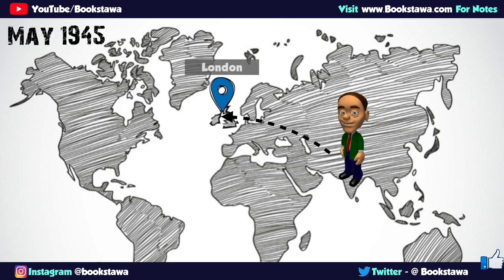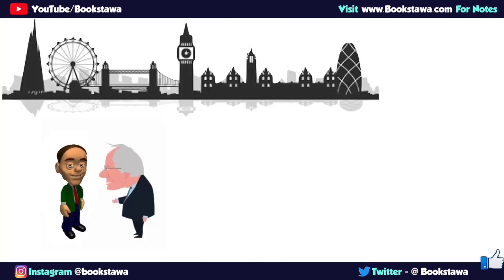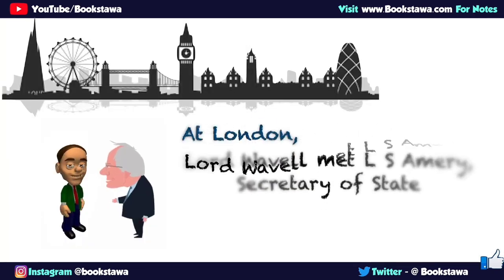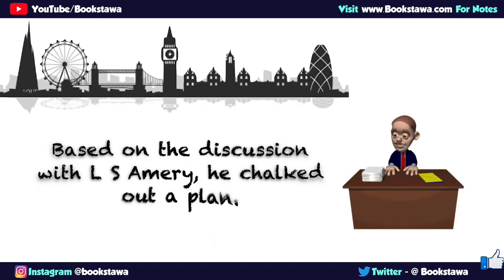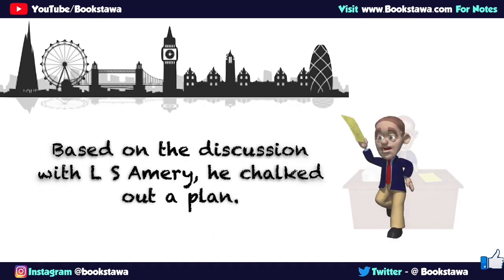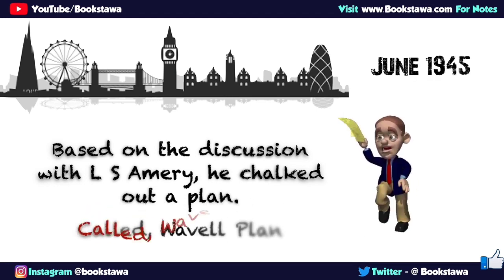In this connection, he reached London in May 1945 with some of his suggestions. After reaching there, he held discussions with the Secretary of State L.S. Amery and prepared a plan of action. And finally, in June 1945, Lord Wavell announced his solution to break the Indian constitutional deadlock. This solution is called the Wavell Plan.